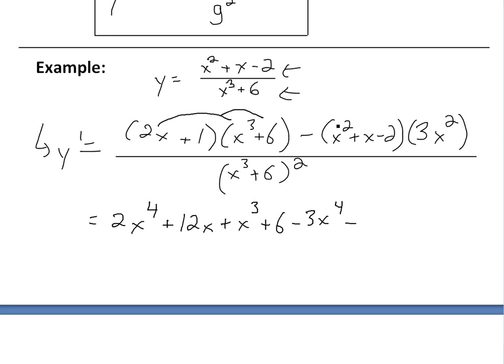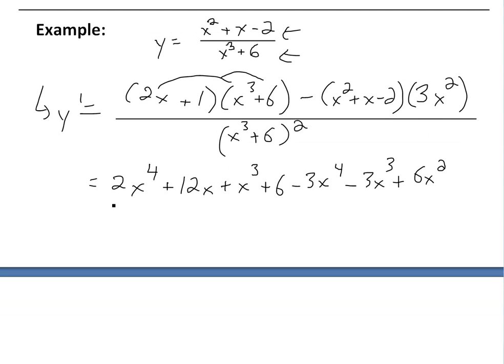so we go minus x times 3x², that's going to be minus 3x³. And then we have this negative 2 times 3x², which is negative 6x², but then we have a negative in here, so it multiplies out, so it will be a positive 6x². And once again, all divided by (x³ + 6)².